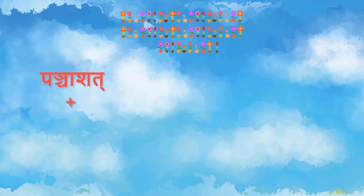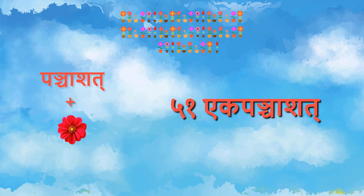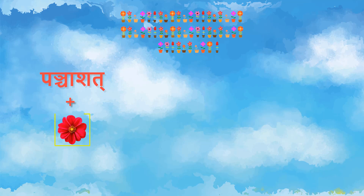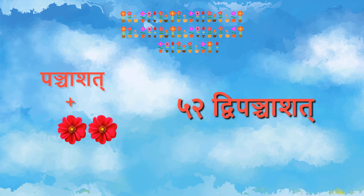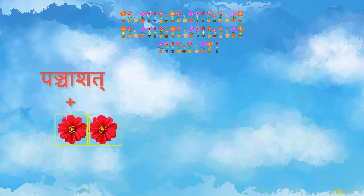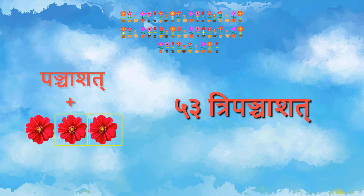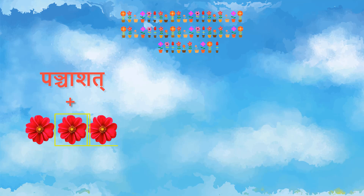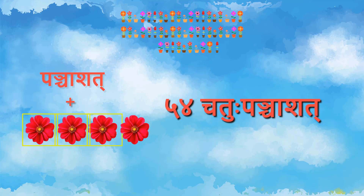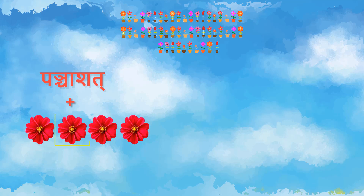अब हम पंचाशत में अगर एक और जोड़ते हैं तो होगा एक पंचाशत — Fifty-one. पंचाशत में हमने जोड़ा एकम, द्वे — Fifty-two. पंचाशत Fifty-three: Fifty plus three. अब हम पंचाशत में जोड़ेंगे एकम, द्वे, त्रीनी, चत्वारी — Fifty-four.